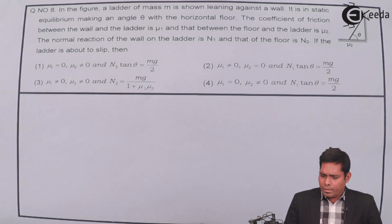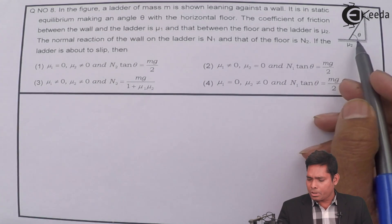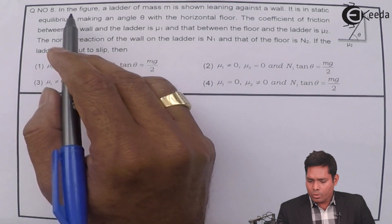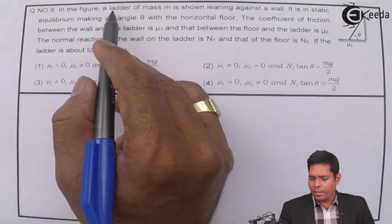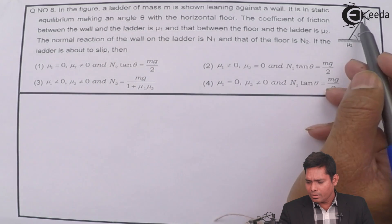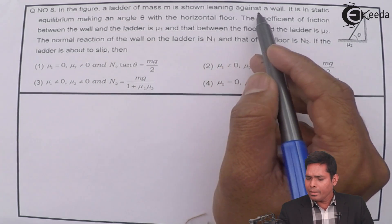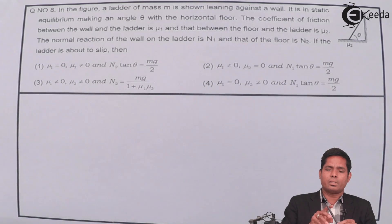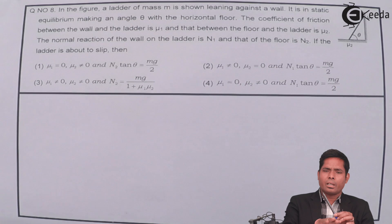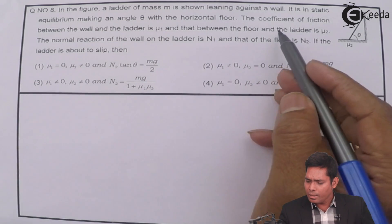The question, as you can see from the diagram, is from mechanics and some friction is involved as mu is there. The question says: in the figure, a ladder of mass M is shown leaning against a vertical wall. There is a floor and the ladder is kept leaning against the wall like this, as you can see here.